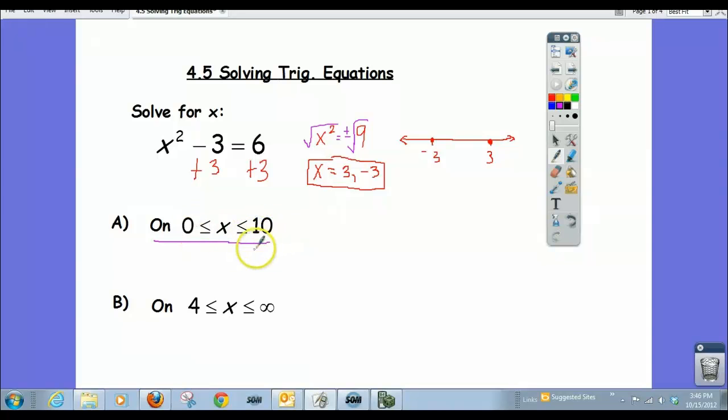Well, if that's the case, one of these answers no longer applies. Negative 3 is not in the interval. Here's 0, and we have 10 out here. The only one that falls in between those two is 3. So that changes our answer. We're just going to give 3 as our answer.